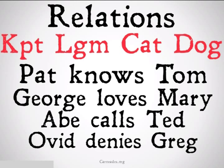These relations could be things like 'Pat knows Tom,' 'George loves Mary,' 'Abe calls Ted,' or 'Ovid denies Greg.' You should look into the specific relation you're talking about or check out the paper you're focusing on if you're curious as to which way the relation goes. Sometimes KPT means Pat knows Tom, sometimes that might be Tom knows Pat. There's not really a generic rule — generally it goes in order of the letters, but unless the relation has the property of symmetry, it's going to matter whether it's George loves Mary or Mary loves George.